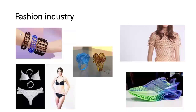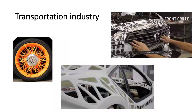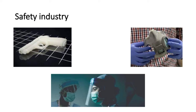In the transport industry, people are trying to manufacture different components of cars with the help of 3D printers — for example, a front grille component and even the entire frame of a car can be manufactured with a 3D printer. In the safety industry, face masks, face shields, and items used in the defense industry have been manufactured with 3D printers, notably during the pandemic.